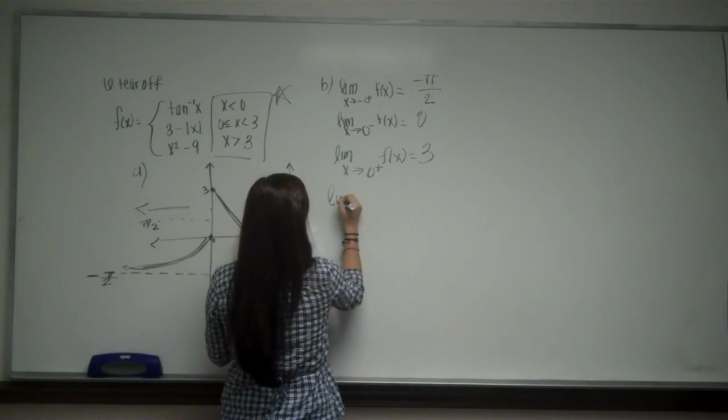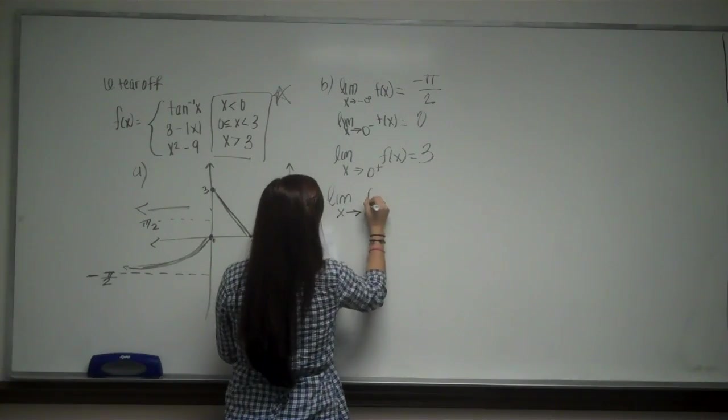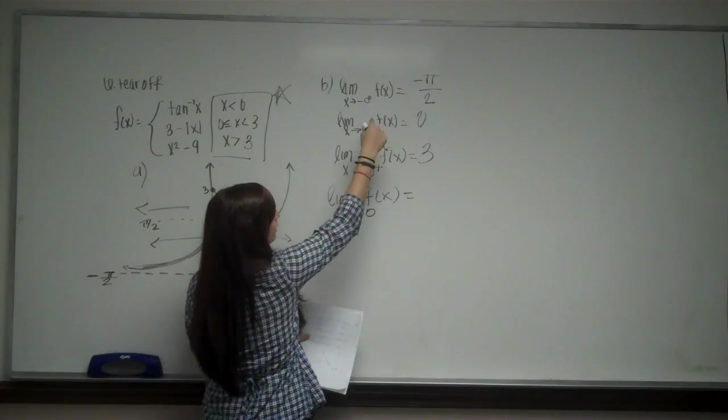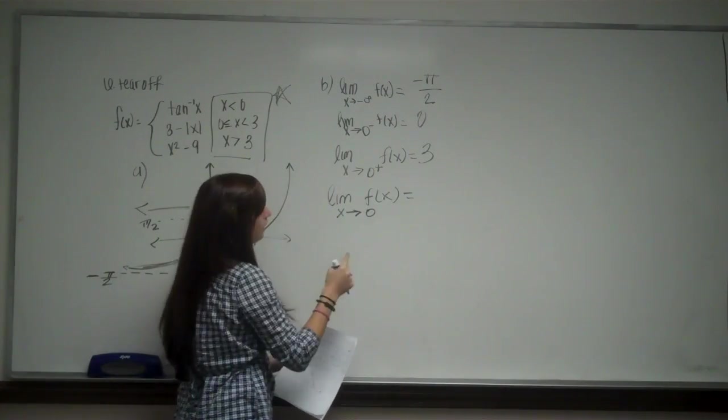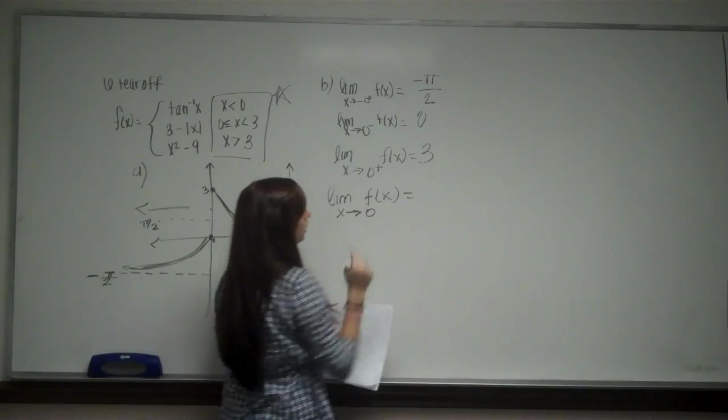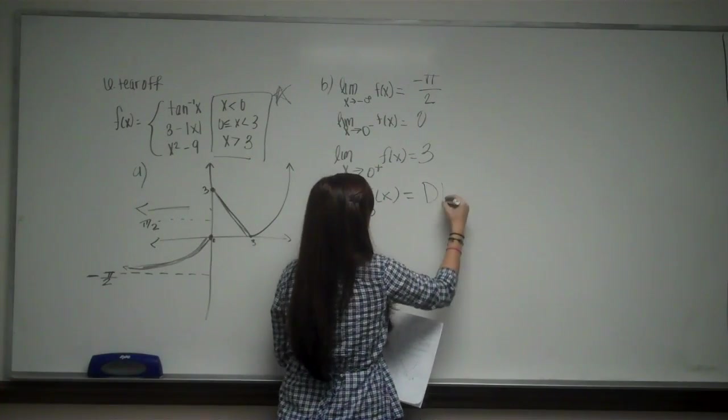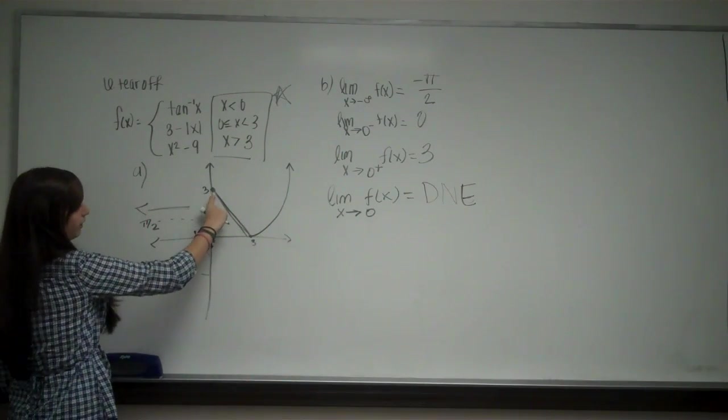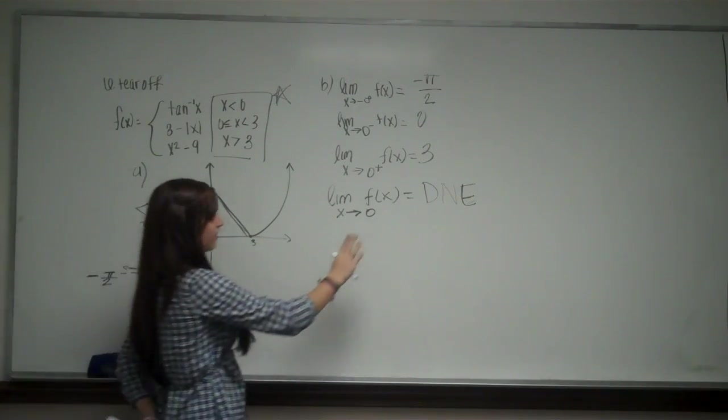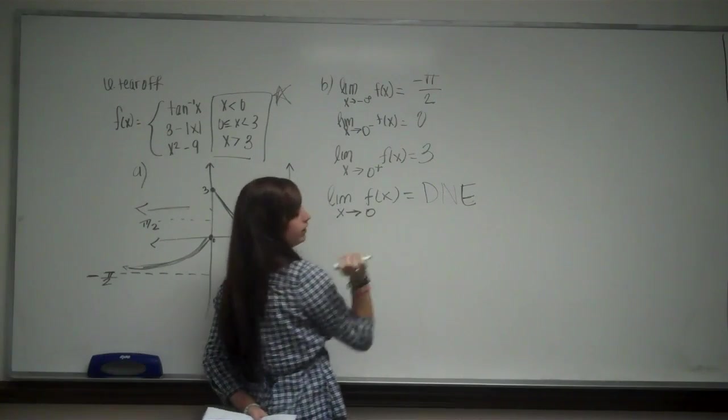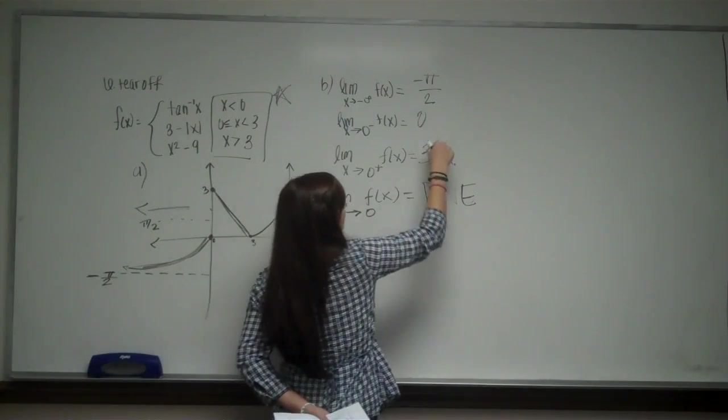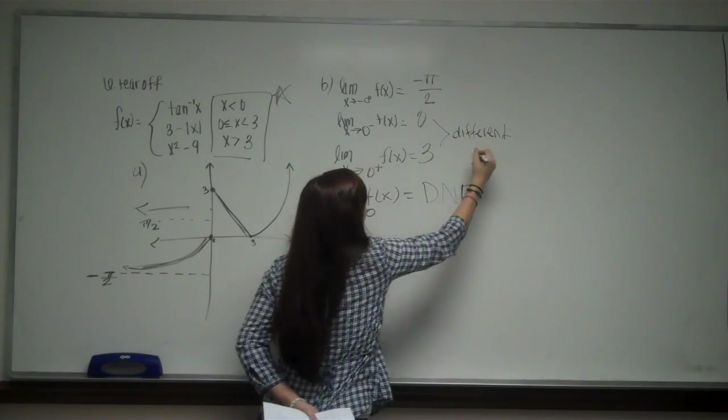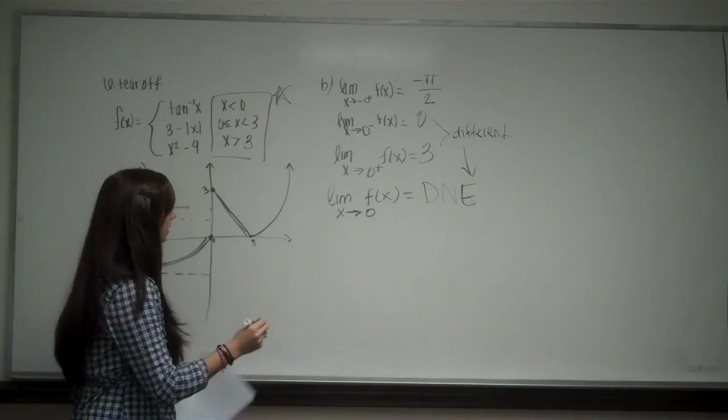Now in the next column, you have the limit as just x approaches 0 of f of x. Now because the limit of 0 coming from the left and the 0 coming from the right did not agree. I got 0 and I got 3. Those are different answers. This does not exist. Because there isn't one common number that they're approaching. There's a jump there. So say that this was 0, then it would be 0. But because this is two different numbers, then it does not exist.